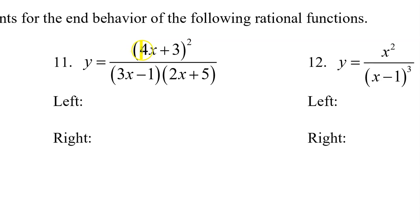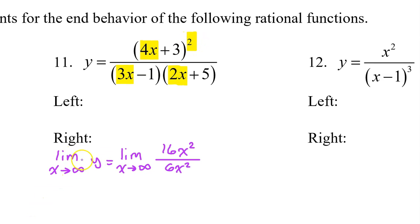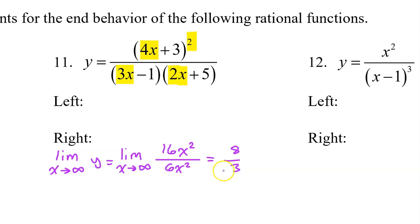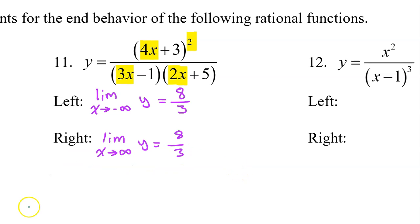Number 11 is given in factored form, so we focus on the leading term of each factor. Don't forget about the exponent. The right-end behavior of y will equal the limit as x approaches infinity of 16x squared over 6x squared. But then we see that the x squared will cancel, leaving the limit to equal 16 divided by 6, which is 8 over 3. So that's the right-end behavior, and the left-end behavior will be the same when it's a constant like this.